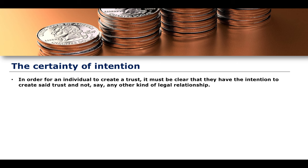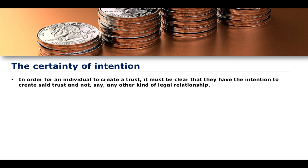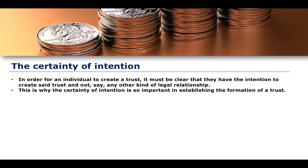So what does the certainty of intention tell us? It tells us that in order for an individual to create a trust, it must be very clear that they have the intention to do so — that they clearly intended the creation of a trust and not some other kind of legal relationship. Knight v Knight illustrated this nicely because the will was held to be an absolute gift rather than a trust, owing to a lack of certainty of intention, subject matter, and objects.